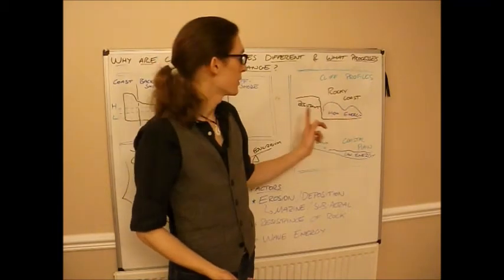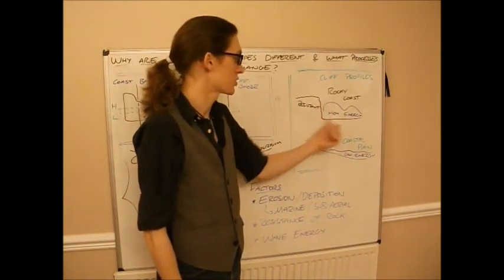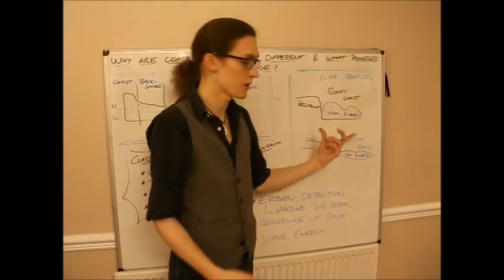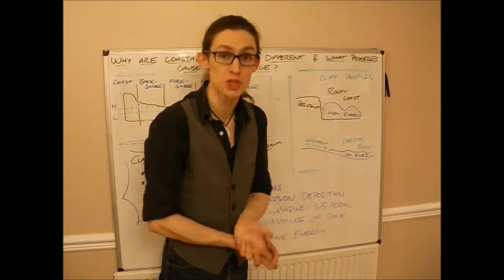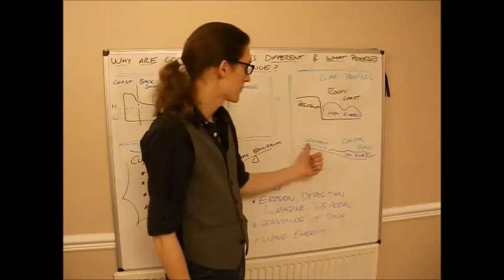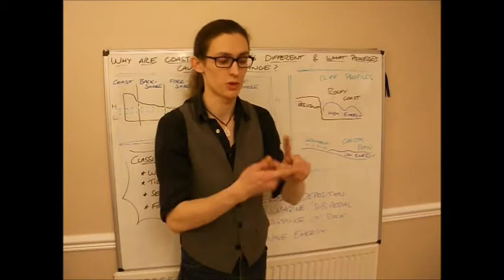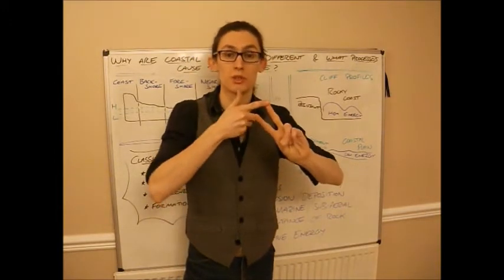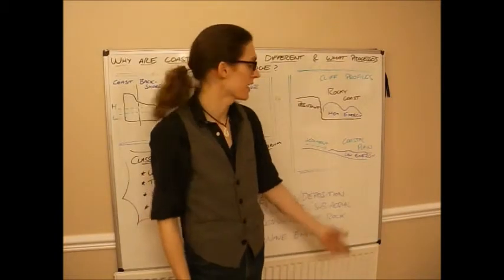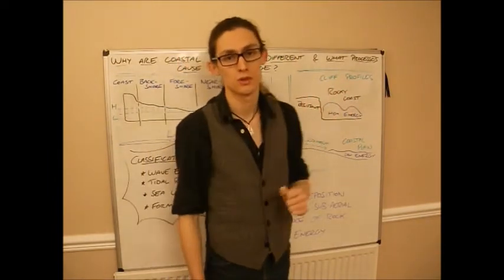So in terms of cliff profiles, we're looking at two broad classifications, particularly in the UK but also around the world. We have rocky coasts with resistant rocks and high energy destructive waves — the waves are attacking these resistant rocks, and you get this very angular shape. The second is the coastal plain, which tends to be more depositional because of lower energy waves, a smoother, gentler cliff profile, and often sediment coming in from sub-aerial processes. So broadly speaking: low energy depositional coastal plains, and high energy erosive rocky coasts.